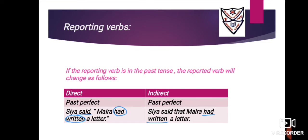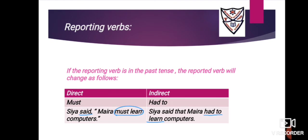Next category: what if the reported verb is already in the past perfect tense? When the reported verb is in past perfect, it remains unchanged. Example: 'Siya said, Myra had written a letter.' Underline 'said,' circle 'had written.' Since it is already past perfect, it faces no change. Answer: 'Siya said that Myra had written a letter.' — 'had written' remains 'had written.'